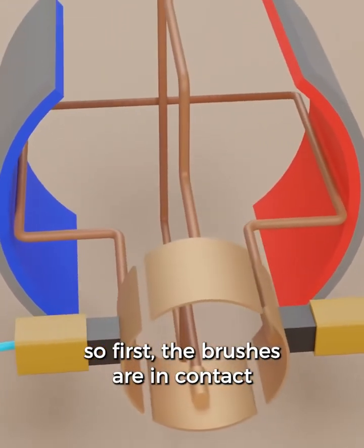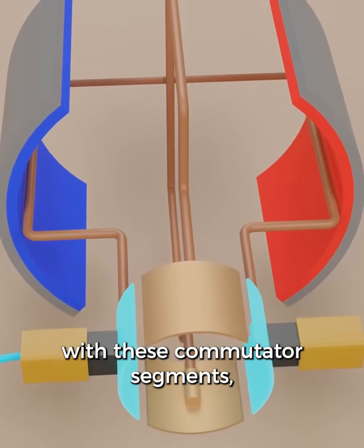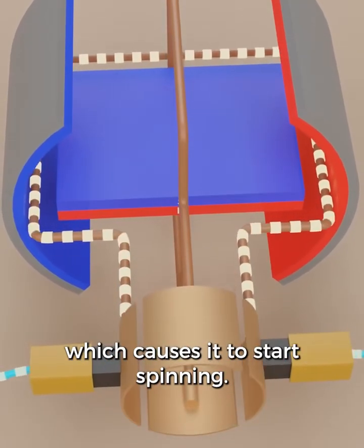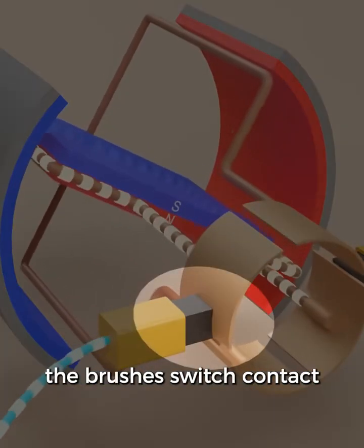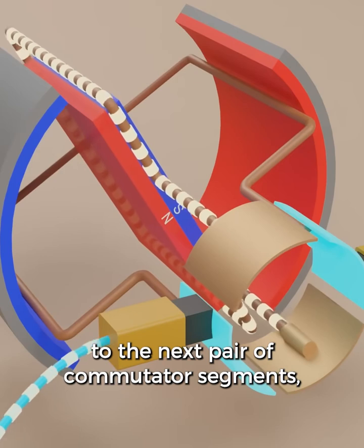So first, the brushes are in contact with these two commutator segments, which turns on this electromagnet, which causes it to start spinning. Once we get to here, the brushes switch contact to the next pair of commutator segments,